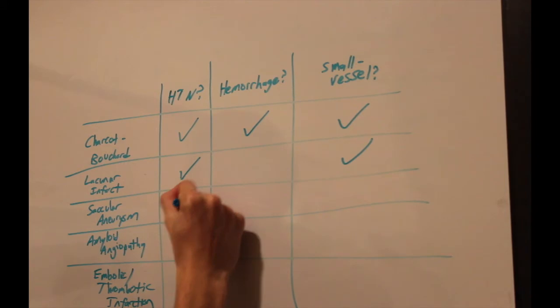This is in contrast to lacunar infarcts, which have a hypertensive etiology and are small vessels as well, but do not involve hemorrhage. They are an infarction, blockage of blood flow. It's really important to differentiate these two because they both occur in the basal ganglia, and they're really the two that you're going to confuse.